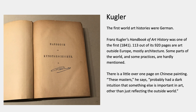He's talking about monuments and ruins of cities and so on, and some parts of the world and some practices and media are hardly mentioned. There's a little bit over one page, for example, on Chinese painting. He says, quote, these masters probably had a dark intuition that something else is important in art other than just reflecting the outside world. That's the most amazingly cursory and vague bit of praise I've seen in an art history textbook. Basically entire cultures are missing from this text, but it was pioneering in its day.